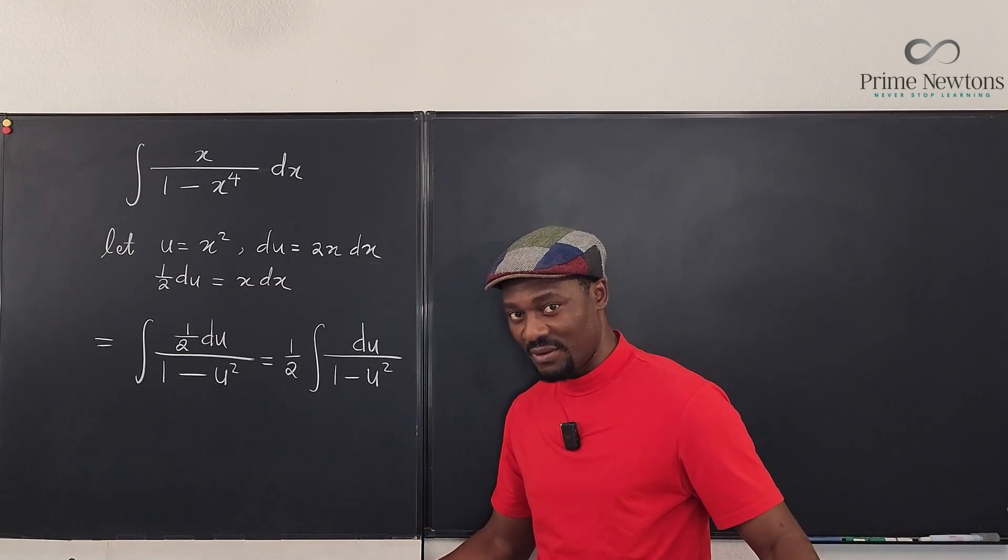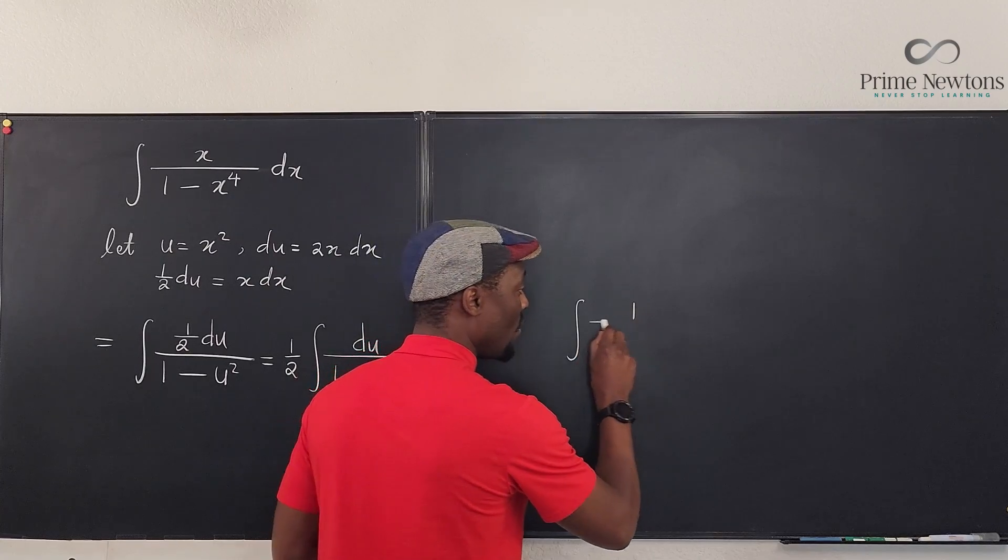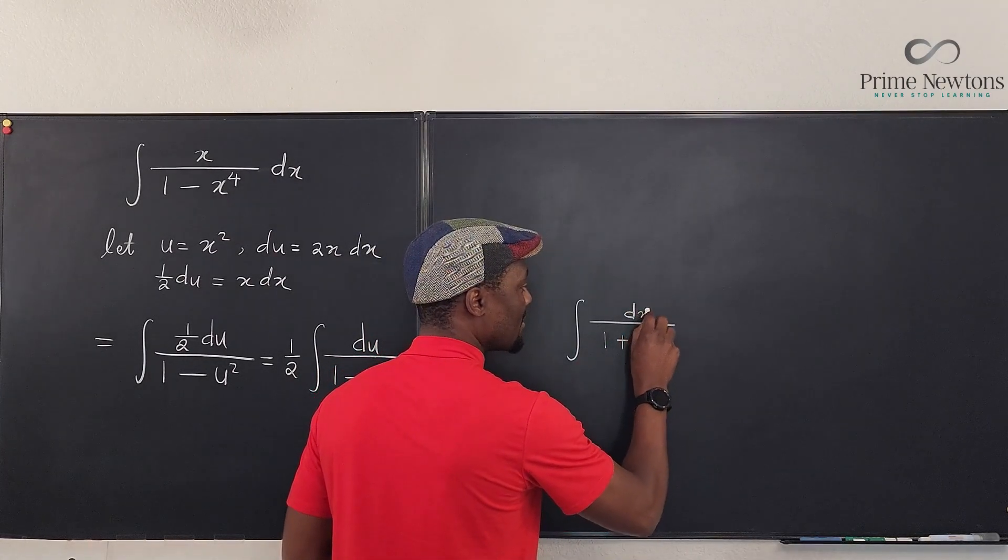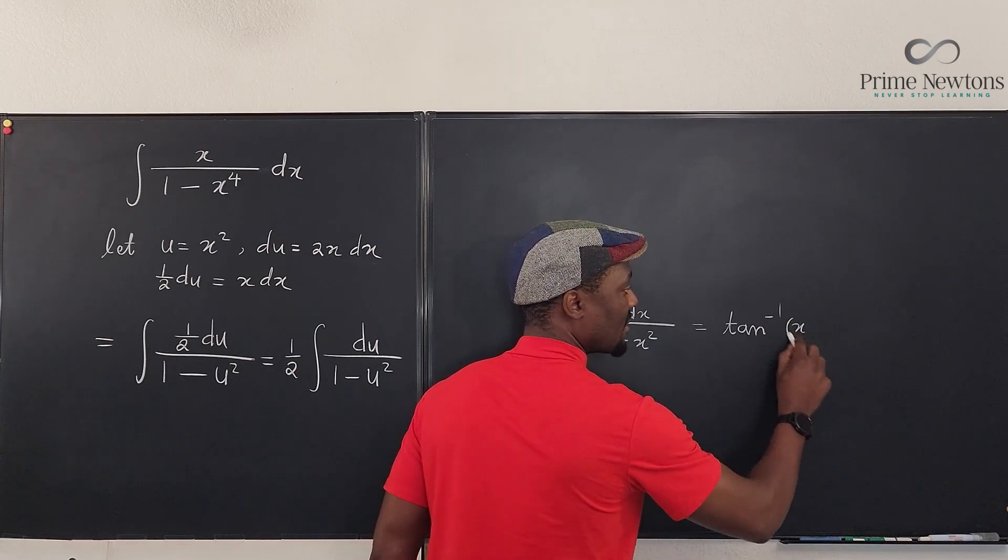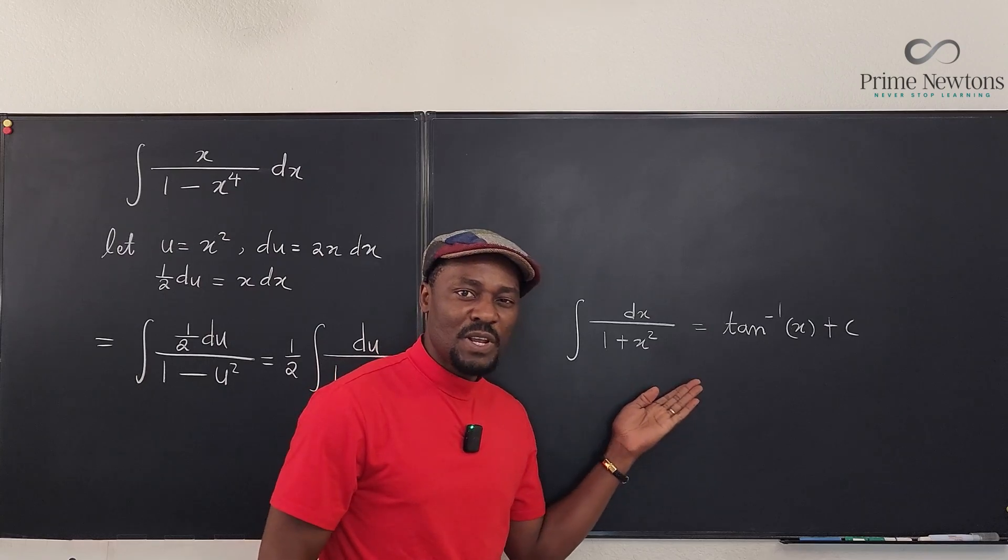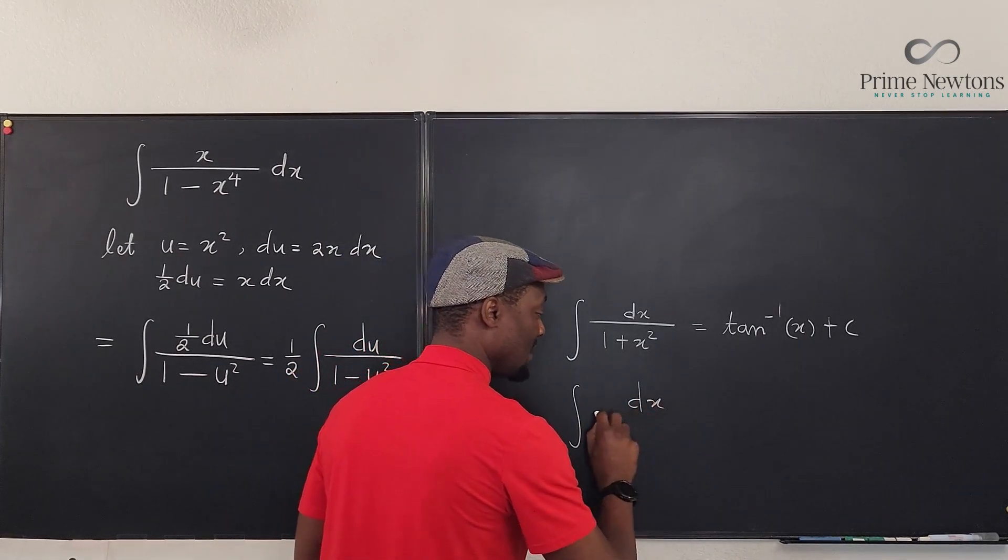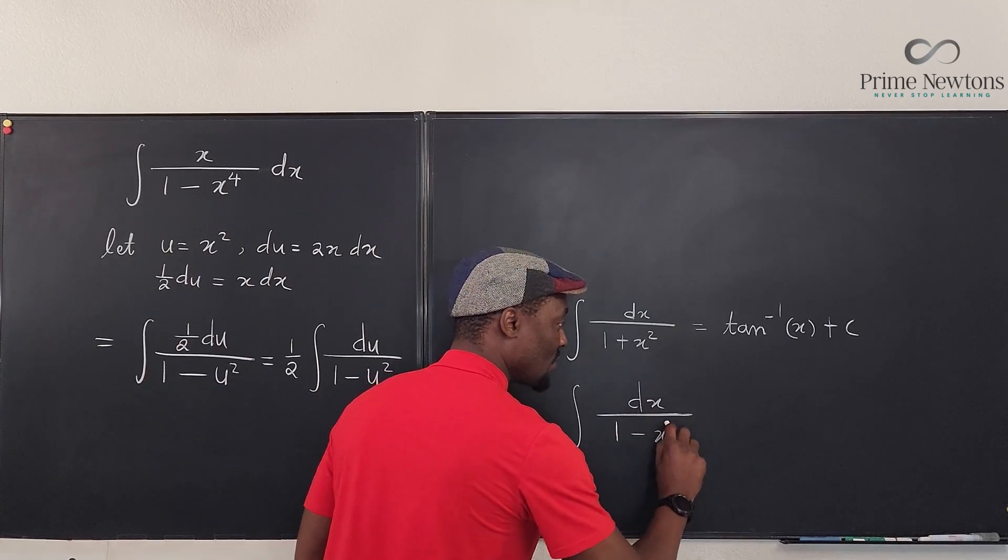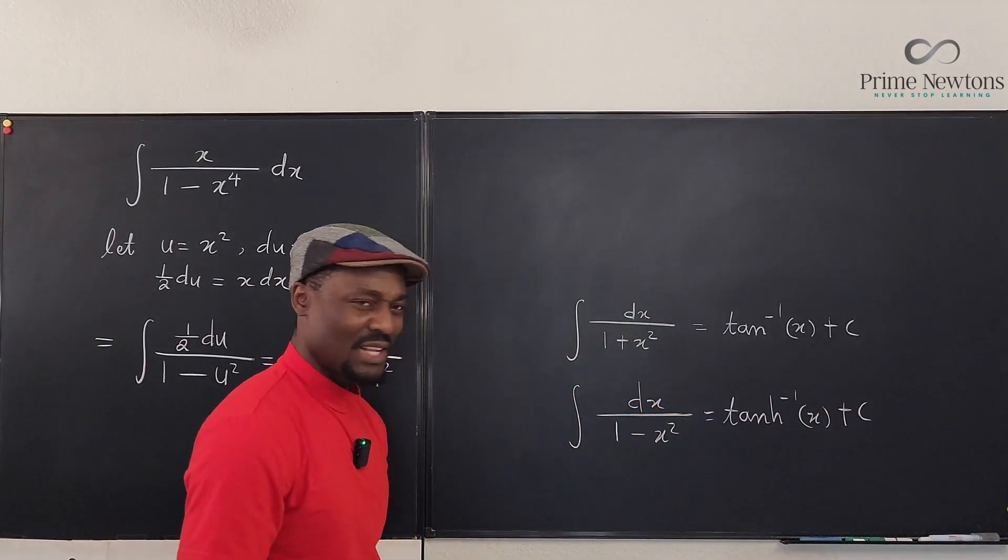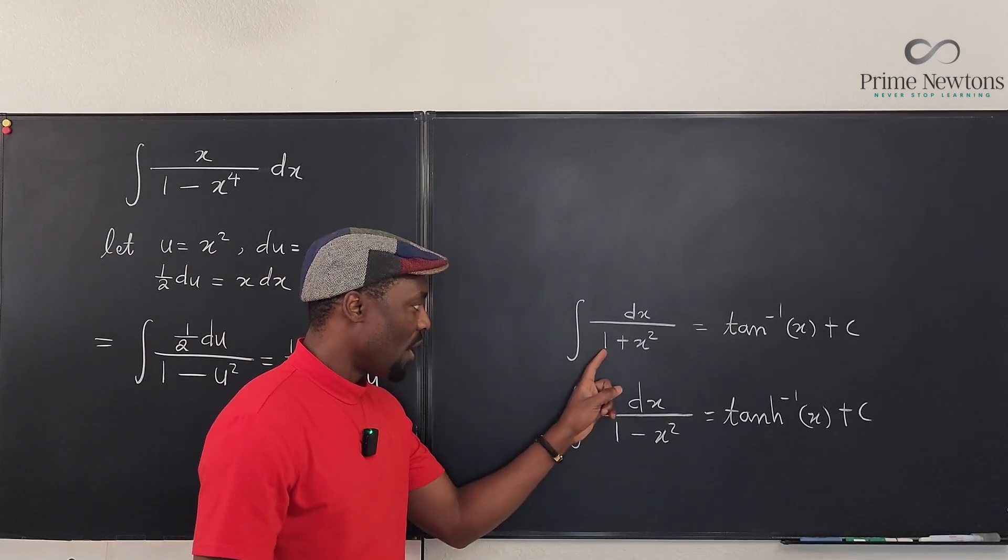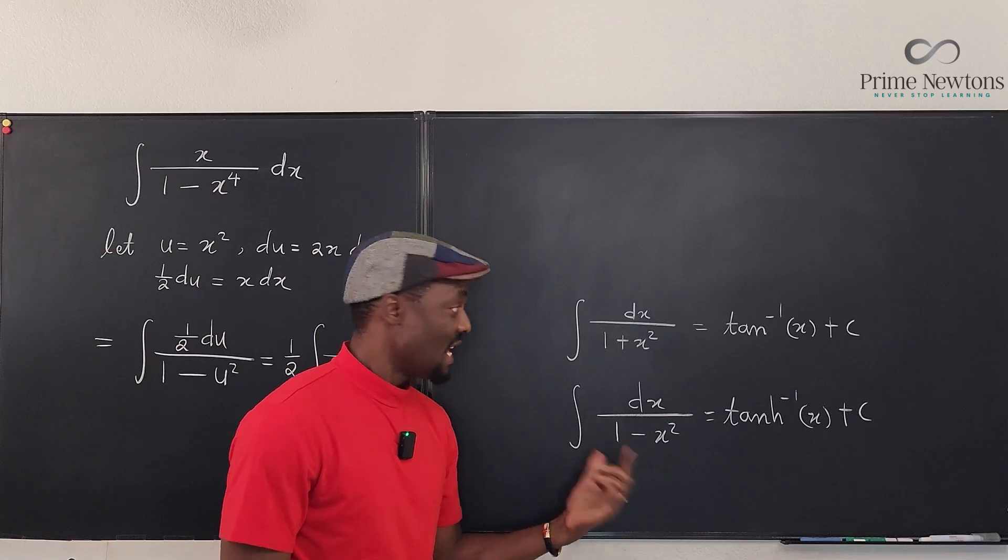Recall that if you have the integral of 1 over 1 + x², this is equal to arctan(x) + C. Because we do this so frequently, there is the hyperbolic tangent that takes care of the sister expression. If this is dx over 1 - x², your answer is hyperbolic tangent inverse of x. Very similar, no square root, one is positive the other is negative.